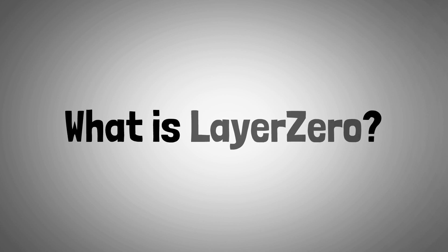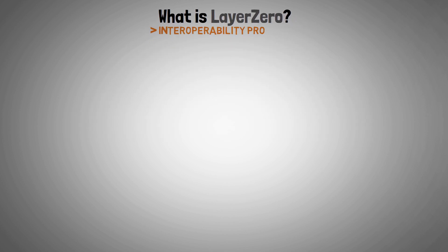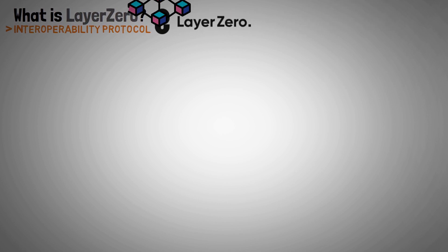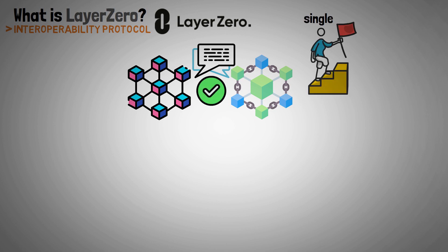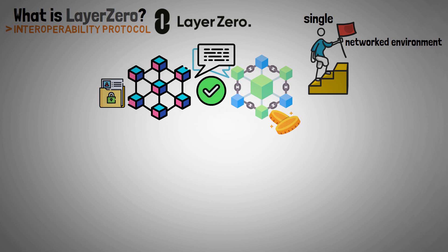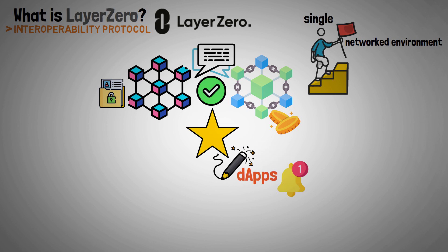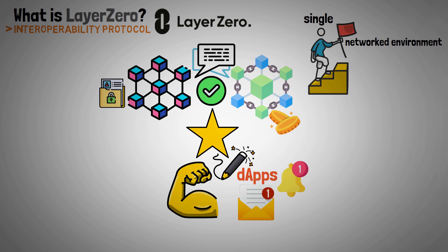Let's start with what is Layer 0. An interoperability protocol called Layer 0 was created to make it easier for different blockchains to communicate with one another. Its goal is to establish a single networked blockchain environment that will allow data and assets to flow freely between different networks. This feature is essential for the creation of decentralized applications, which must communicate with various blockchains in order to take advantage of their distinct resources and features.